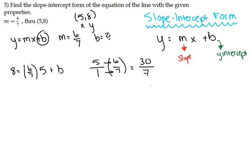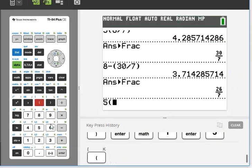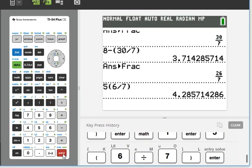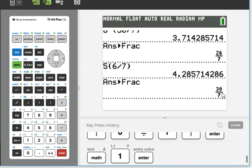You can also do this in the calculator by multiplying 5, make sure you put your parentheses in, times 6 divided by 7, and it'll get you a decimal. You can click math, hit 1, and enter, and it'll give you the same fraction.